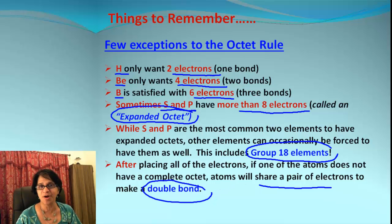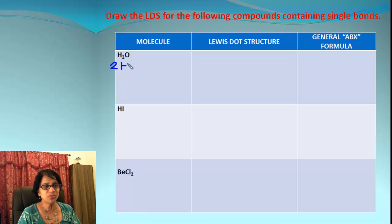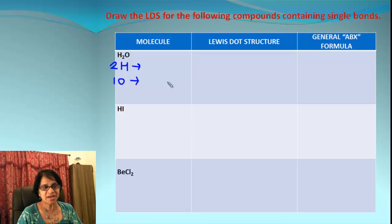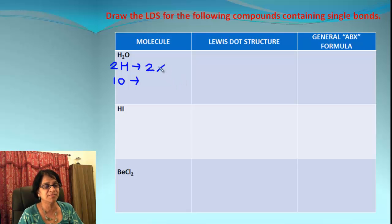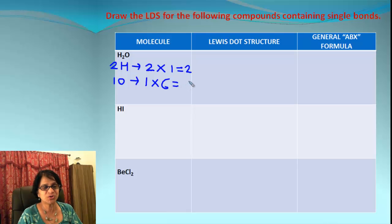Let's actually work on some molecules and draw Lewis dot structures. Our first molecule is H₂O — water. We have two hydrogen atoms and one oxygen atom. Now we need to count valence electrons for each — think about it like a potluck where hydrogen and oxygen are bringing electrons. Each hydrogen is in group 1, which means it has one valence electron, so two hydrogens will bring two electrons. Oxygen is in group 16, which means it has six valence electrons.